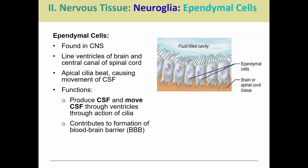Ependymal cells are found in the ventricles of the brain and in the central canal of the spinal cord. These cells are going to help move and produce cerebrospinal fluid — they make it and help it flow through the ventricles through little cilia. If we look at the picture, we see all these little hair-like projections — those are the cilia. They beat in unison in a pattern to help stimulate the flow of cerebrospinal fluid, kind of washing it through those ventricles. Ependymal cells also help produce and maintain the blood-brain barrier.